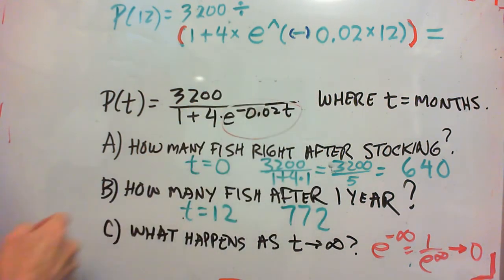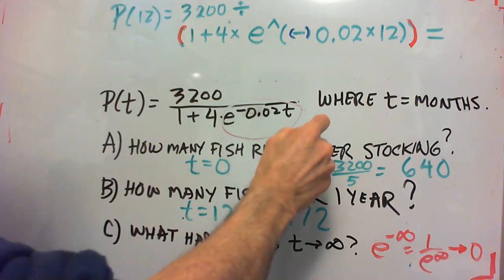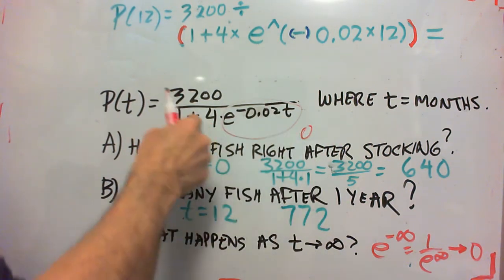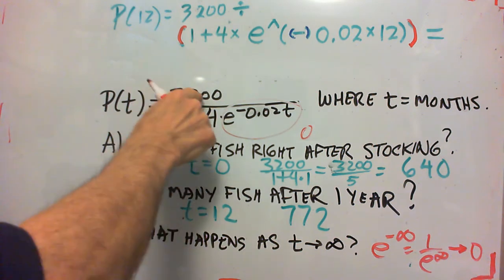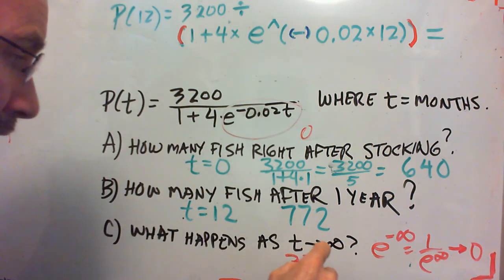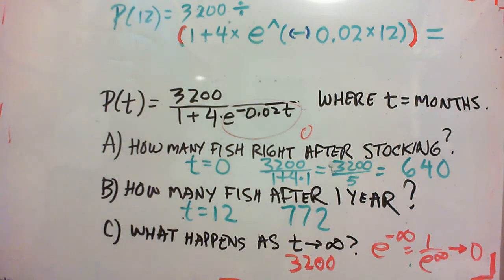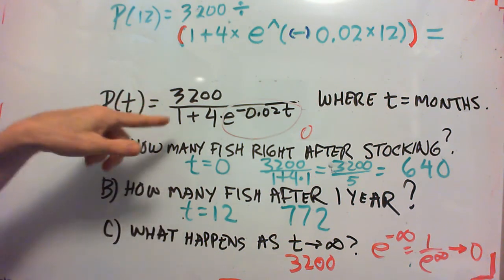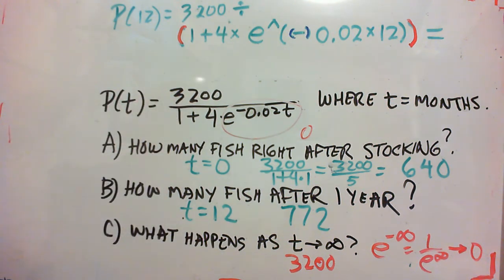So as t goes to infinity, this whole thing is going to 0. 4 times 0 is 0. 3200 divided by 1 plus 0 is just 3200. So this 3200 gives the maximum amount for an infinite amount of time. As time goes on, the population will get closer and closer and closer to 3200.